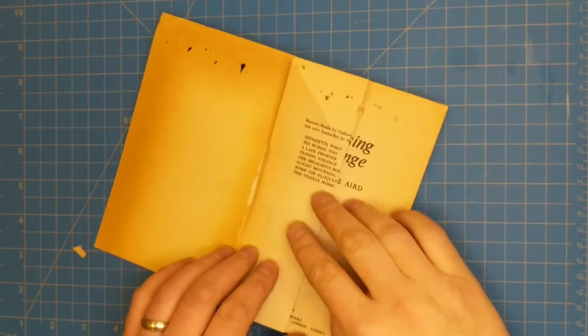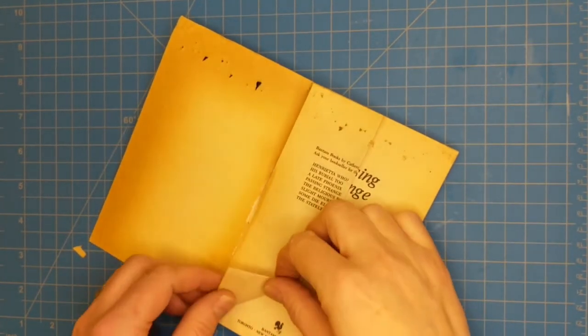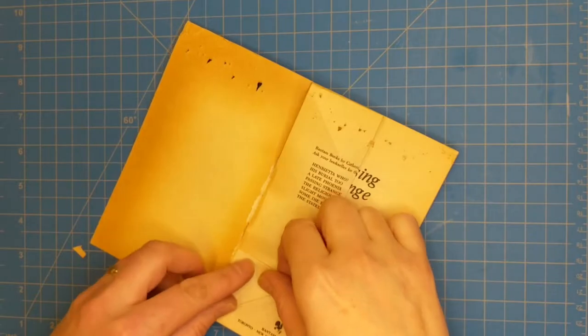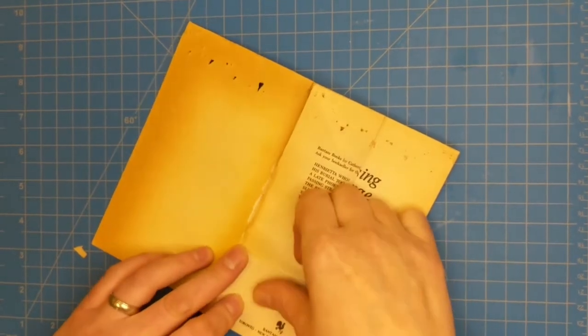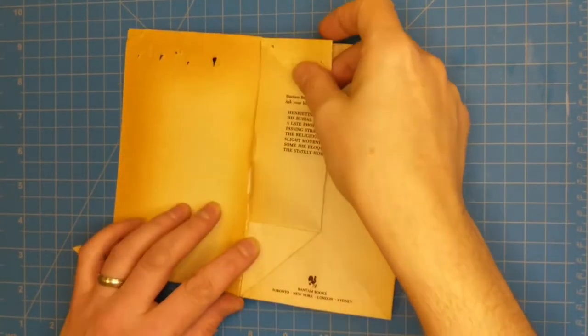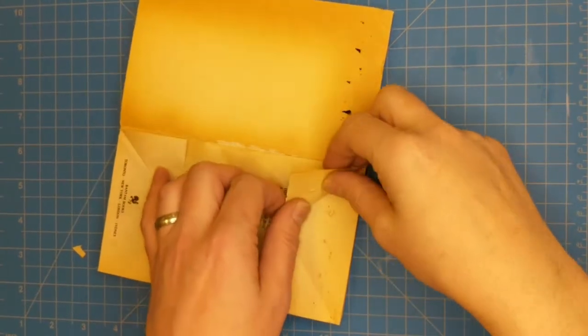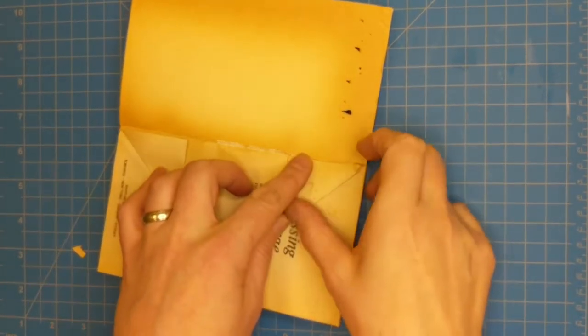For the second fold, you're going to take a corner and fold it in to this binding. For the third fold, you're going to fold the other corner in.